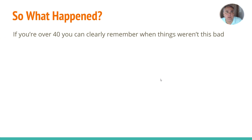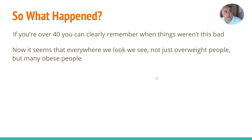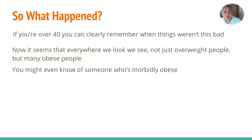So what happened? How did we get to this point where we have this ridiculously bad problem across the country? Well, if you're over 40, you can remember when things weren't like this. I'm 51, and when I was a kid — and even a teenager in the 80s — it wasn't this bad. Now it seems that everywhere we look, we see not just overweight people, but many obese people. You might even know someone who's morbidly obese, and I certainly know some as well.